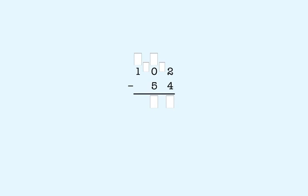We start subtracting in the ones place. We can't subtract 4 from 2, so we have to take a 10 to make 10 ones. But in the tens place, there are no tens to take — there's a zero. So what we do is take a 100 from the hundreds place to make 10 tens.